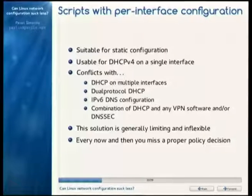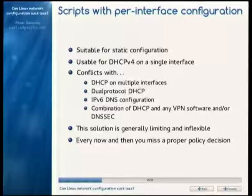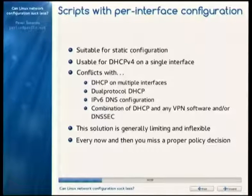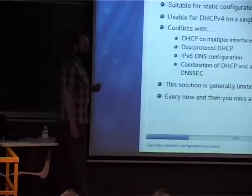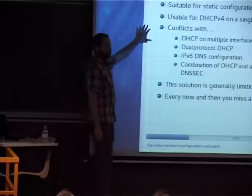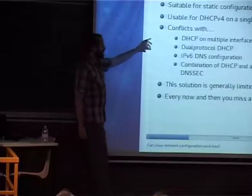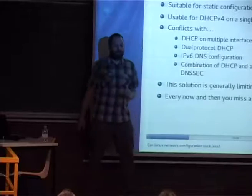Network scripts have specific names in various distributions and use per-interface configuration files. They can usually set one interface up with all the configuration. Debian network scripts seem to be the most flexible and versatile of all solutions at this level. The biggest problems arise when you want to do DHCP on several interfaces, or even when you want to do IPv6.